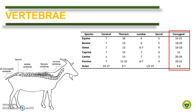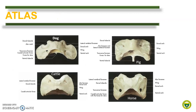Again, it is important for you to know the vertebral formula of each animal being studied. Now, let us try to identify the species differences per specific vertebra.